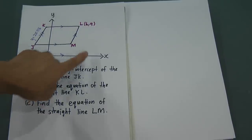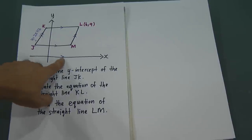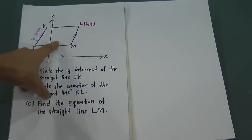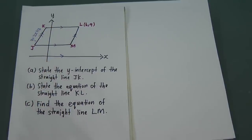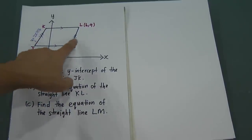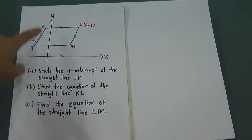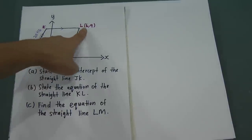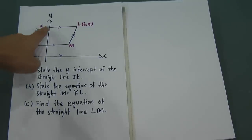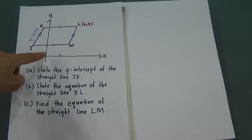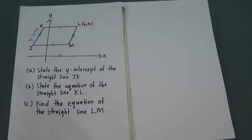You see the arrows drawn in purple — this means parallel. These two arrows mean that straight line KL is parallel with straight line LM. Straight line KL and straight line JM are both parallel with the x-axis.